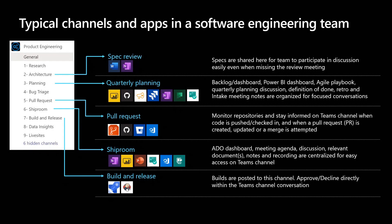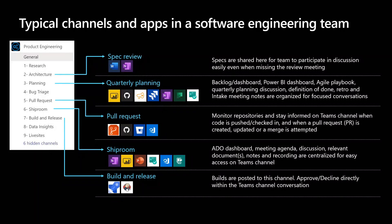In the architecture review, you might use a Word document for your spec, or OneNote to organize meeting notes from architecture reviews. In the quarterly planning channel, you want context around what should be built in the next quarter. The apps you might use there are a Power BI tab to look at signals, a GitHub board to show reported issues, User Voice to see things people are asking for, Jira, OneNote, Planner, and Azure Boards. Things that matter for planning are all there in the planning channel — you don't have to have 100 different tabs open.